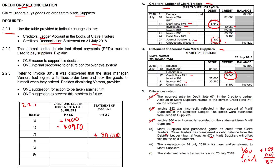So applying item (d): the journal voucher 570 amount is 5400 in the creditors ledger. We transfer it to the statement of account because of this inter-transaction between Mariti Suppliers and Clear Traders. From the statement of account we subtract that amount — minus 5400 — because there was an inter-trade between our creditor and us.